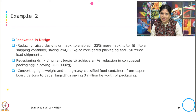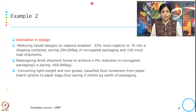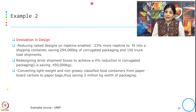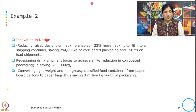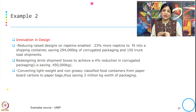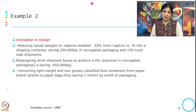What innovations did they make in the design? They reduced the raised design on napkins. Typically some napkins have raised designs — by reducing this raised design, they enabled 23 percent more napkins to fit into the shipping container, which saved 294,000 kg of corrugated packaging and 150 truck loads of shipment. Just by reducing the raised design on napkins, they saved space in their container, saved corrugated packaging, and optimized their load shipment equivalent to 150 truck loads.